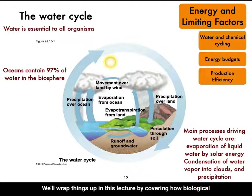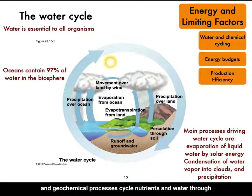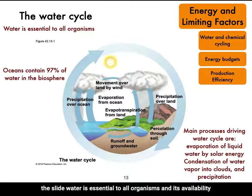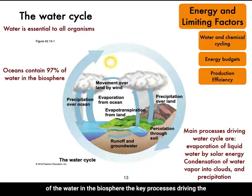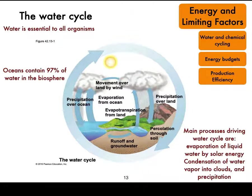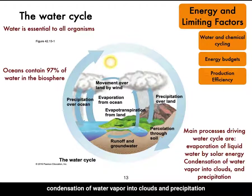We'll wrap things up in this lecture by covering how biological and geochemical processes cycle nutrients and water through ecosystems. We'll start with the water cycle. Water is essential to all organisms, and its availability influences the rate of ecosystem processes, especially primary production and decomposition in terrestrial ecosystems. The main reservoirs of water are oceans, which contain 97 percent of the water in the biosphere.